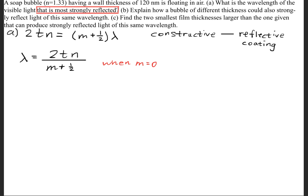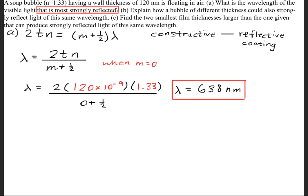The word most indicates that when m is equal to 0, so when that integer is 0, this is where we're going to get the most strong reflection. So we'll go ahead and plug in our numbers, and we'll get a wavelength of 638 nanometers.